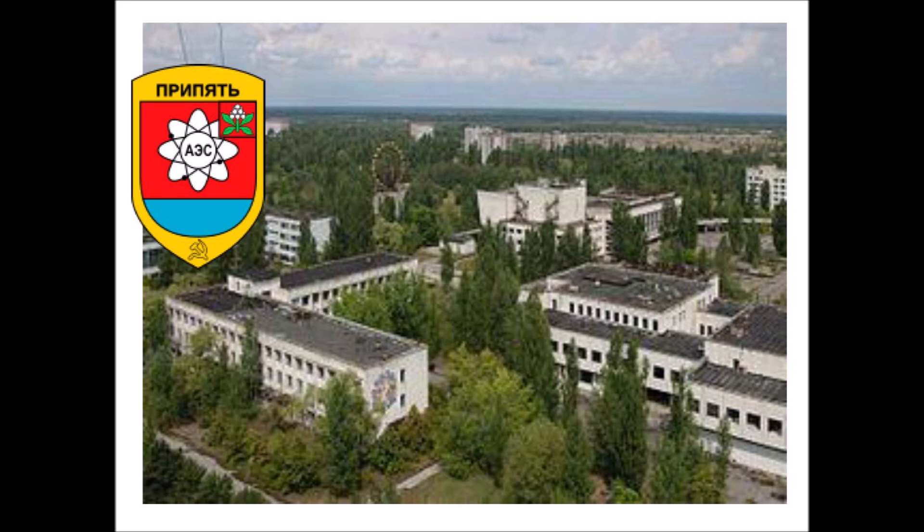The city of Pripyat was founded on February 4, 1970 as a community specifically designated to operate and maintain the nearby Chernobyl nuclear plant. After the disaster, residents were evacuated and the areas surrounding the plant, including Pripyat, became abandoned ghost towns. Some residents have returned to nearby villages despite dangerous radiation levels. It is estimated that the zone around the Chernobyl plant will not be habitable for up to 20,000 years — twice as long as our current human civilization.